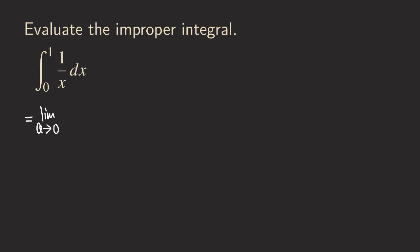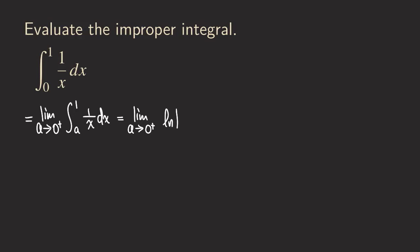So with a approaching zero from the right, we write the integral from a to 1 of 1 over x dx. The integral goes from a to 1, meaning we're taking all values greater than zero — that's why a is approaching zero from the right. We integrate 1 over x, which gives us ln of absolute value of x, and then evaluate it from a to 1.